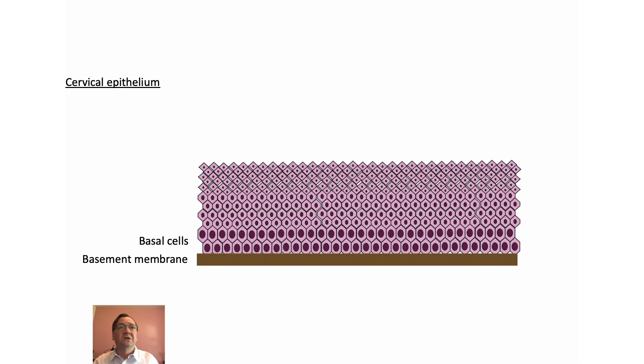We have basal cells lying on the basement membrane, then intermediate cells that some people call parabasal cells, and then superficial cells. Above that is the cavity of the vagina.